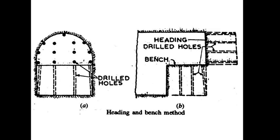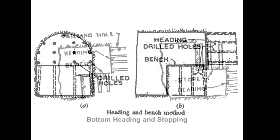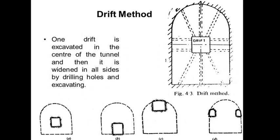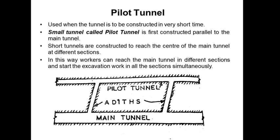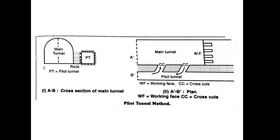The process involves drilling holes, then loading explosives and blasting — first at the top, then at the bottom. In the drift method, a small drift is excavated. The pilot tunnel is used when a tunnel needs to be constructed in a very short time. Short tunnels are constructed parallel to the main tunnel to reach the center of the main tunnel at different sections, allowing workers to reach and start excavation work simultaneously in all sections.